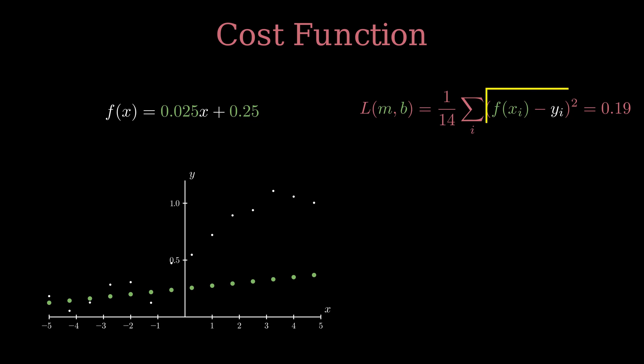In simple words, just subtract each pair of green and white dots, then take its square. Once you have all the dots subtracted and squared, add them together and in the end just divide by the total number of dots, which is 14 in this case.